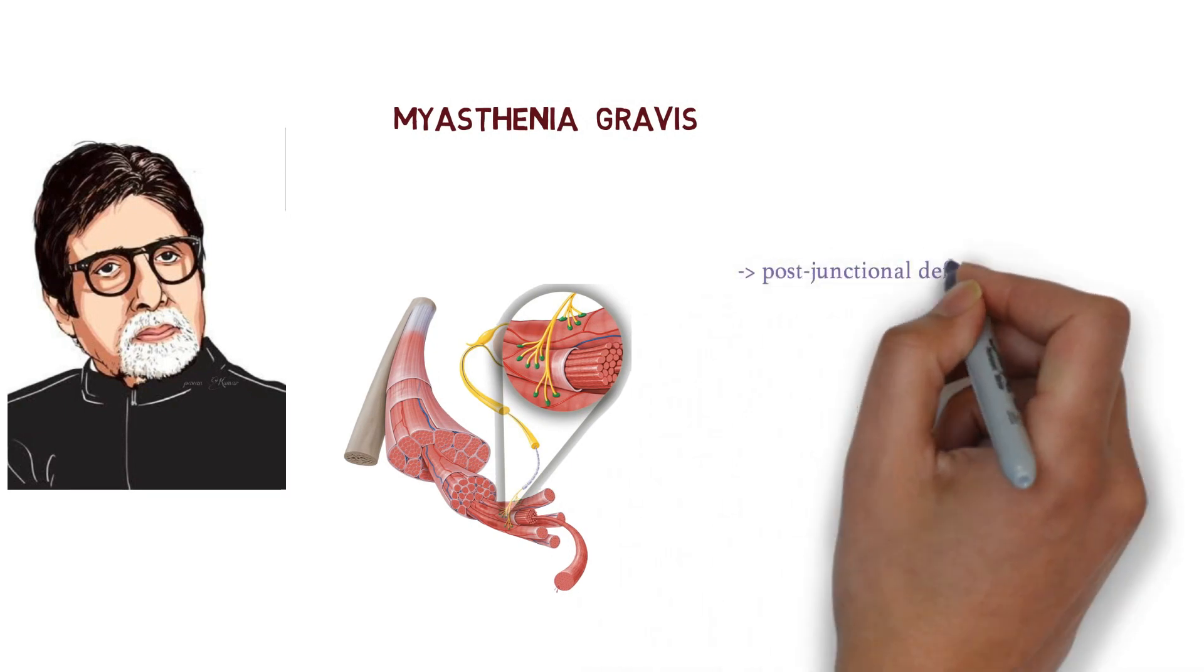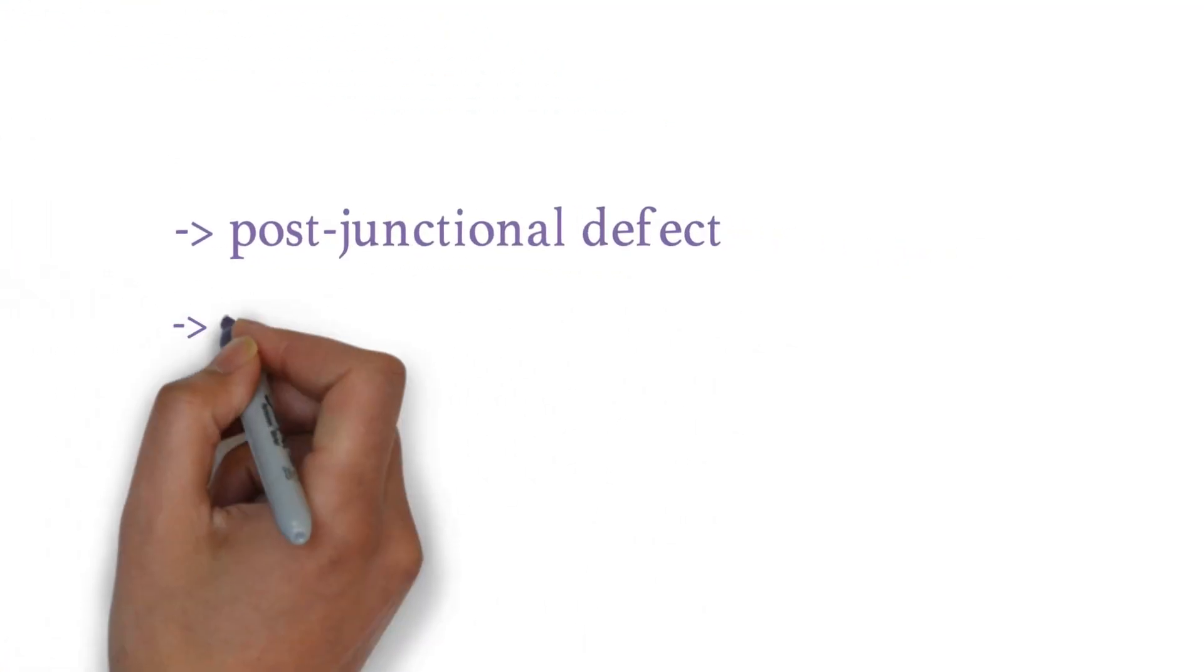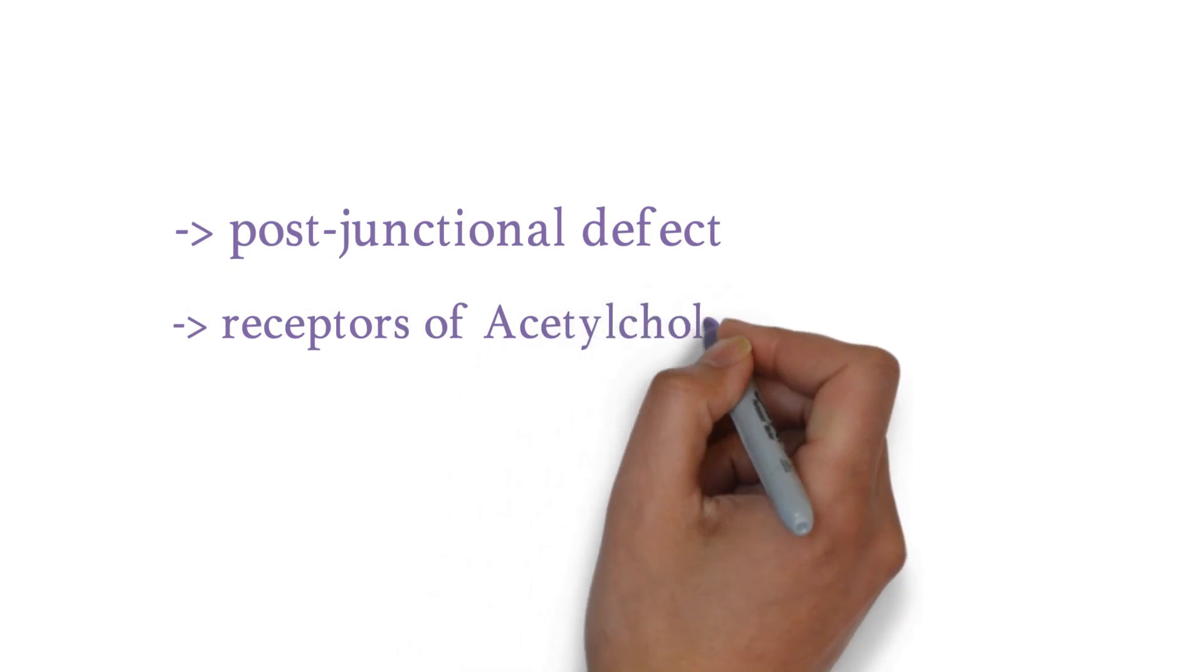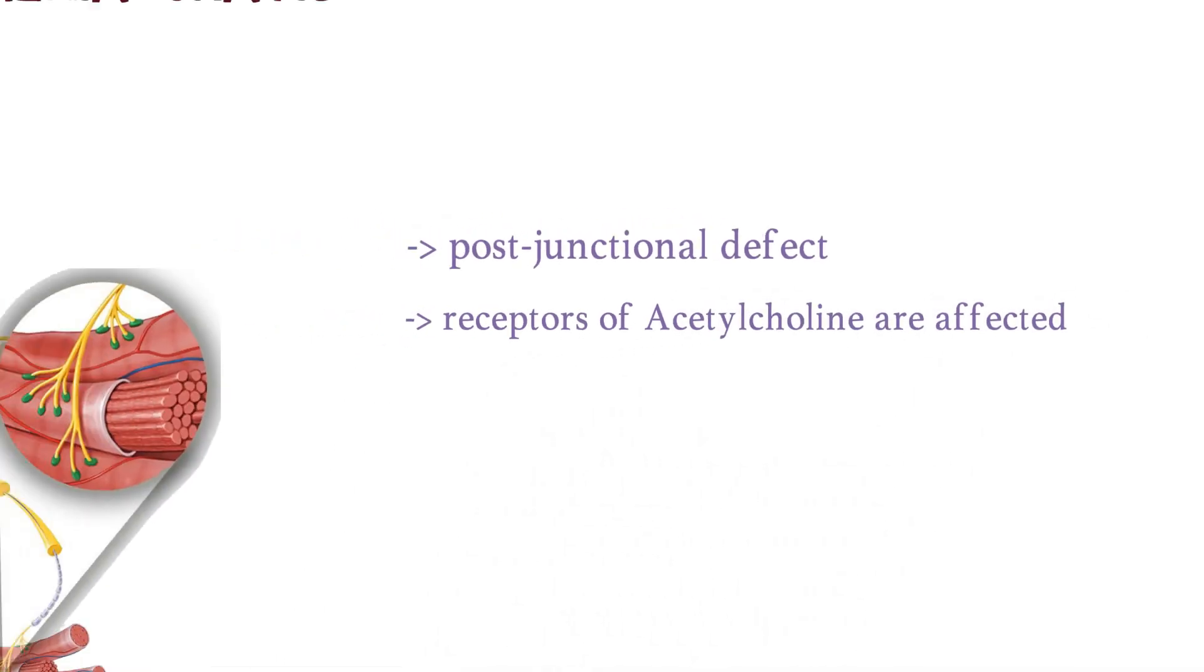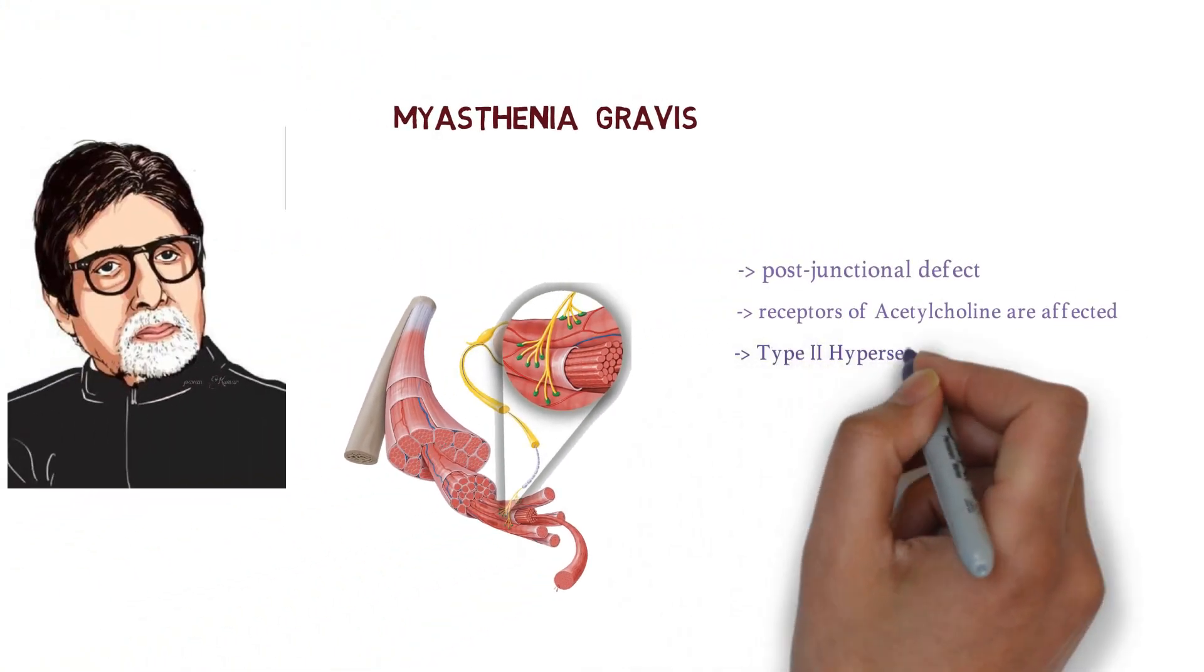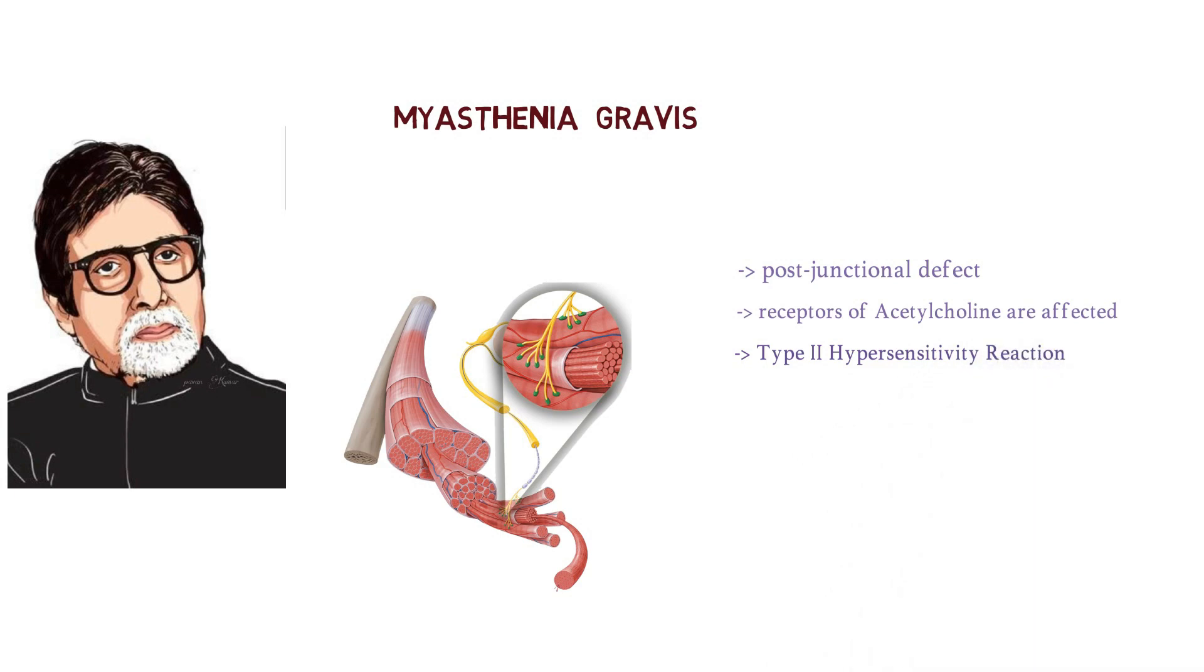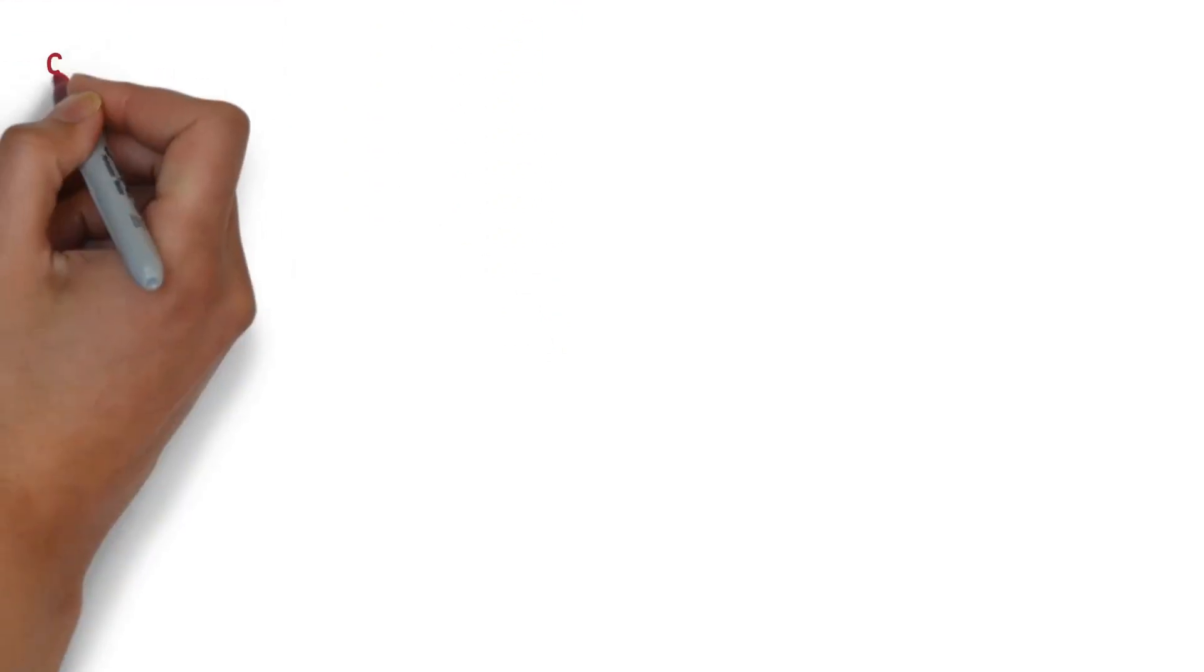Myasthenia Gravis is a post-junctional defect due to affected receptors of acetylcholine. It is a type 2 hypersensitivity reaction. So Amitabh Bachchan is suffering from type 2 hypersensitivity reaction. I will try to make this lecture in story pattern.